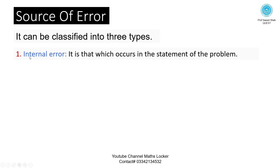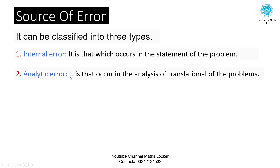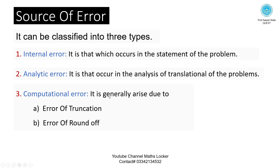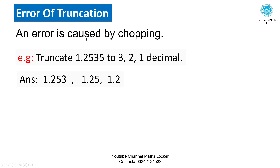Source of error — it can be classified into three types: (1) Internal error: occurs in the statement of the problem. (2) Analytic error: occurs in the analysis of the foundation of the problem. (3) Computational error: generally arises due to truncation error or rounding error. Truncation error is caused by chopping — e.g., truncating 1.2535 to three decimals gives 1.253, to two decimals gives 1.25, to one decimal gives 1.2.